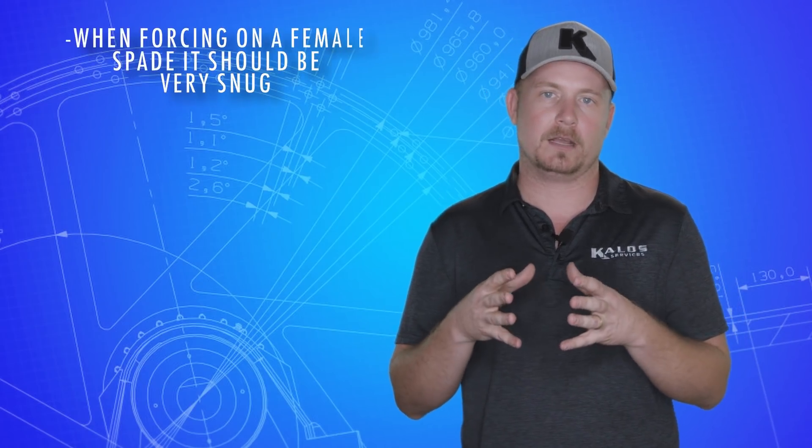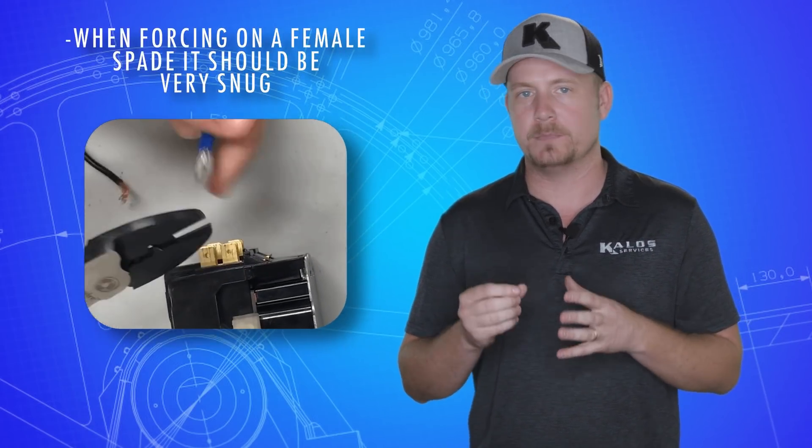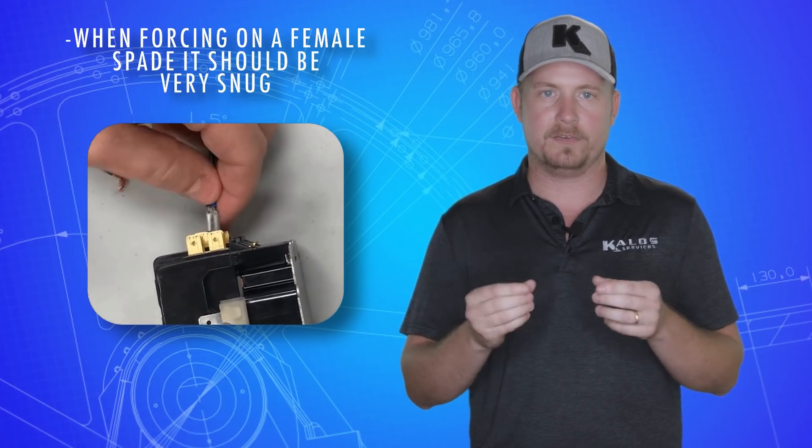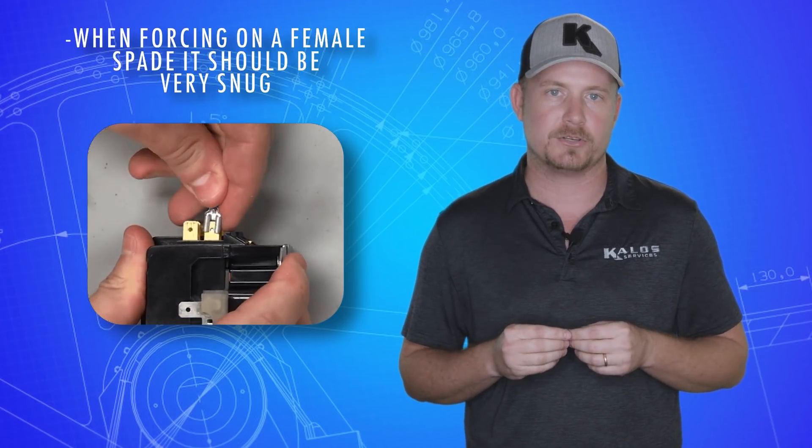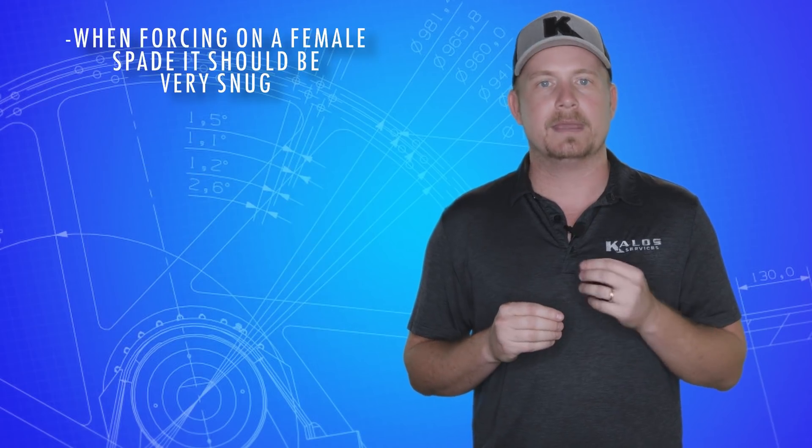When forcing on a female spade on a capacitor, for example, it should be very snug. If it's loose at all, pull it off and pinch down the spade sides a bit to ensure there's a snug fit. When making a crimp connection, only do so on a stranded wire and use an appropriately sized connector.